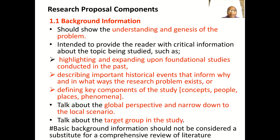In chapter one, section 1.1 comprises the background information. The background information of the study shows the understanding and genesis of the problem — do you understand the problem and where it originates? It is intended to provide the reader with critical information about the topic, for example by reviewing additional studies conducted previously. You have to write about previous studies done elsewhere, criticize them, identify the gaps, and describe important historical events that inform why and how the research problem may exist.